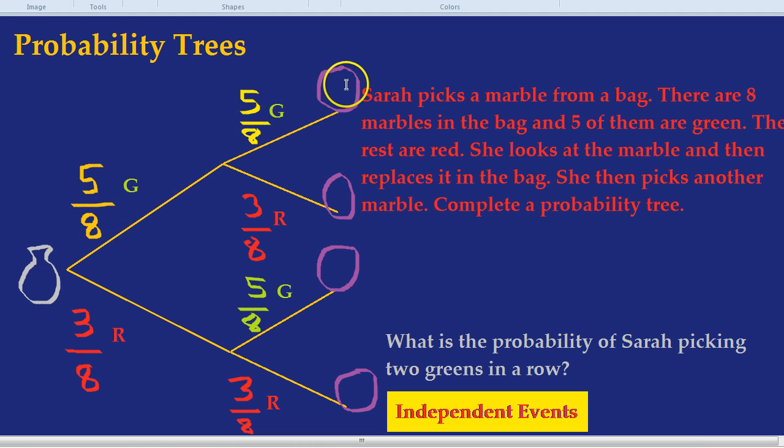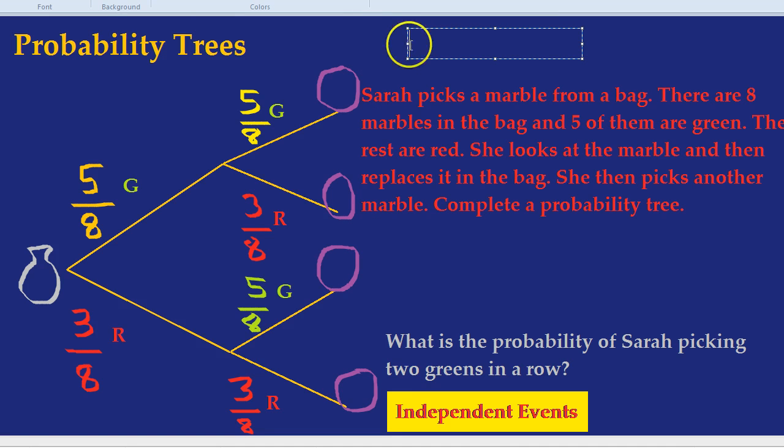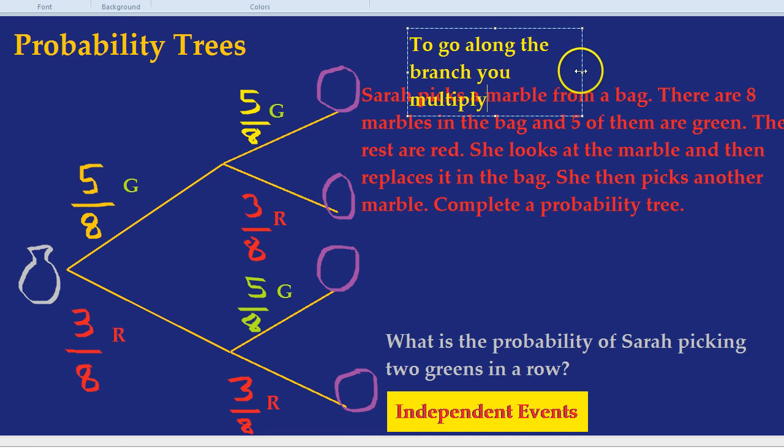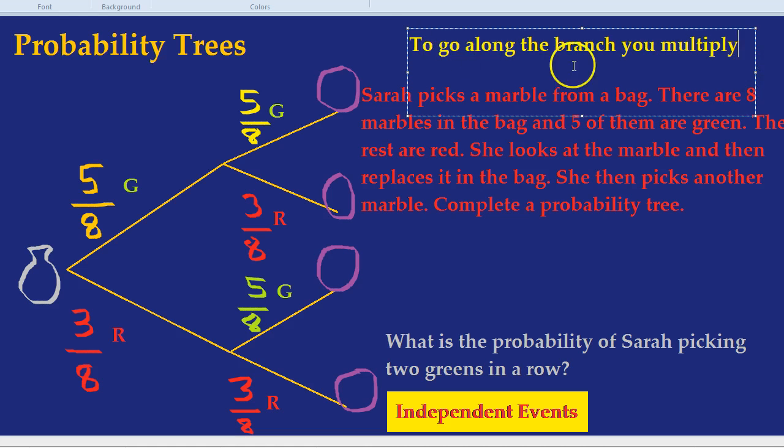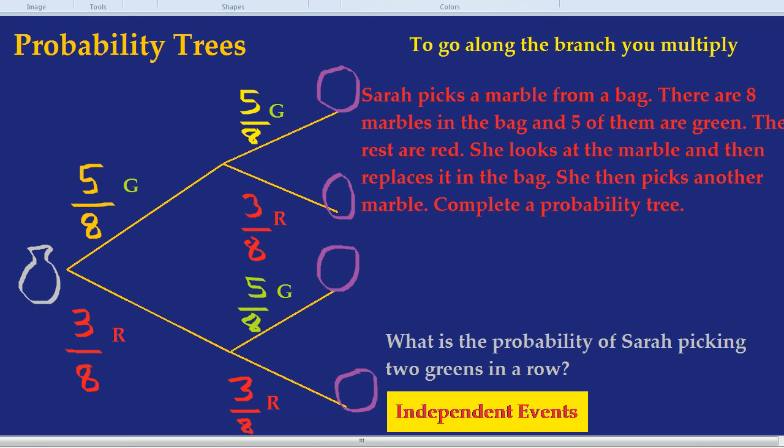Here's another key point that I would love for you to remember. To go along the branches you multiply. So to go along any branch we always multiply. Let's underline that. It's really important: to go along the branches you multiply. I would write that down if you have a notebook handy.